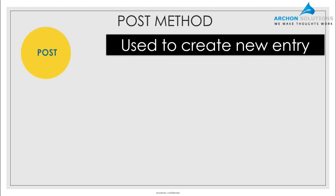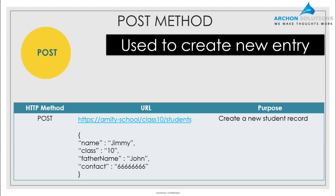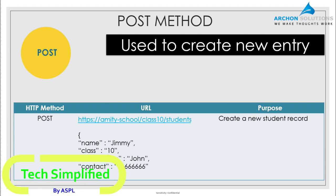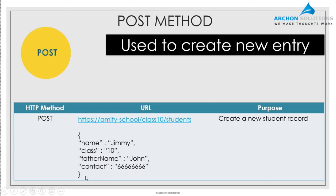The second method is the POST method. The POST method is used for creating a fresh entry. Suppose a new student has joined the school and is being enrolled into class 10. The POST method again makes use of the same URL — https://amityschool/class10/students — but here the HTTP method set in the request will be POST. When this method is set, the back-end knows the user is not trying to fetch details but instead trying to create something.